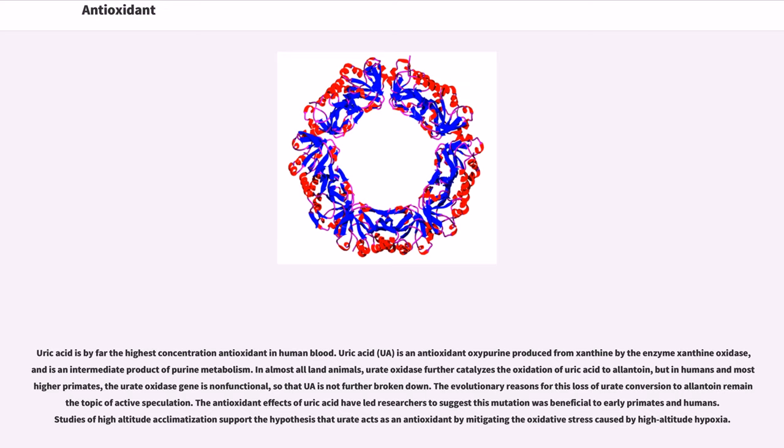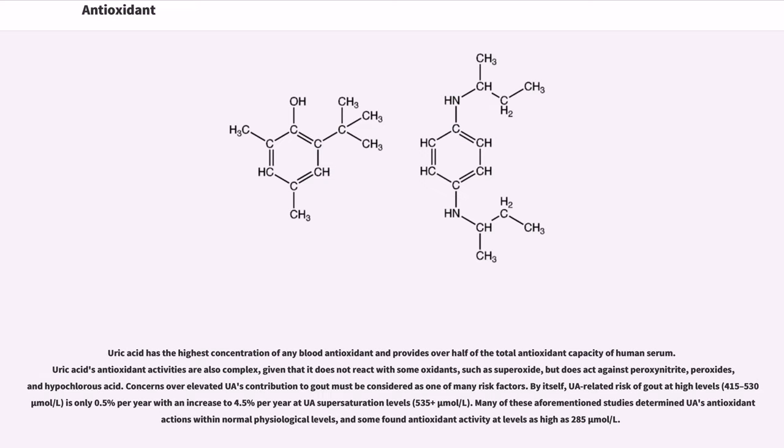The antioxidant effects of uric acid have led researchers to suggest this mutation was beneficial to early primates and humans. Studies of high-altitude acclimatization support the hypothesis that urate acts as an antioxidant by mitigating the oxidative stress caused by high-altitude hypoxia. Uric acid has the highest concentration of any blood antioxidant and provides over half of the total antioxidant capacity of human serum. Uric acid's antioxidant activities are also complex, given that it does not react with some oxidants, such as superoxide, but does act against peroxynitrite, peroxides, and hypochlorous acid.